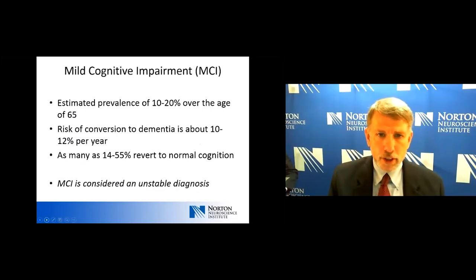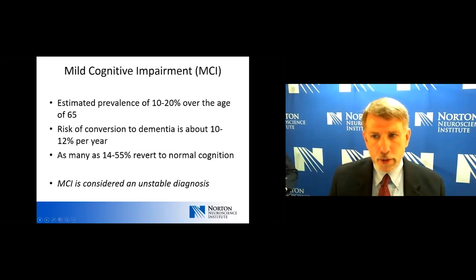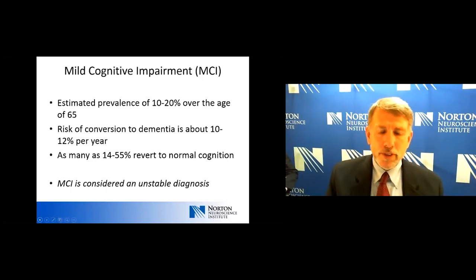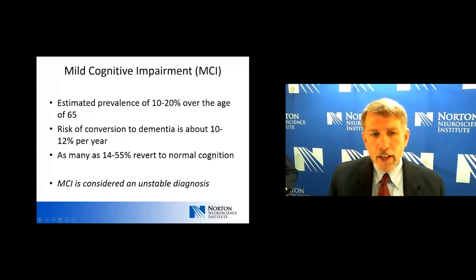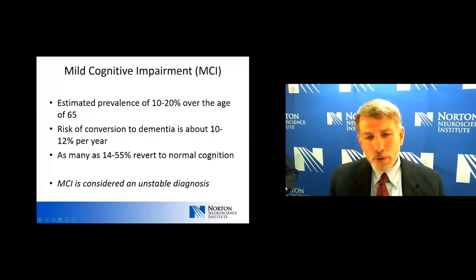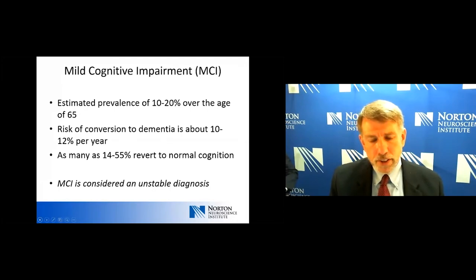Let's look at mild cognitive impairment more carefully. This is a condition where we have some measurable decline in cognition — often memory — but not to the degree where we have clear impairments of activities of daily living. Estimated prevalence is 10 to 20 percent over the age of 65, with recent numbers around 16 to 17 percent. We often quote a risk of conversion to dementia at about 10 to 12 percent per year. However, as many as 14 to 55 percent — depending on the study — will revert to normal cognition. For that reason, MCI is often considered an unstable diagnosis.